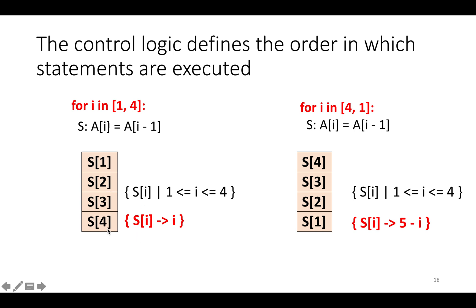If you look at this program trace with time going downward, s1 happens at time one, s2 at time two, s3 at time three, s4 at time four. Then if you look at the modified or reverse loop nest, s_i happens at time five minus i. So for example, s1 happens at time five minus one, which is four, and s2 happens at time five minus two, which is three. The control logic defines the order in which the statements are executed, and in the polyhedral model we capture that using a schedule that maps elements of the iteration domain to the times when they're executed.